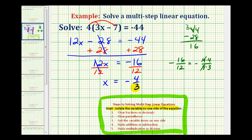Which means if we replace x with negative four-thirds in the original equation, it should make this equation true or satisfy the equation. Let's go ahead and take a moment and check that.